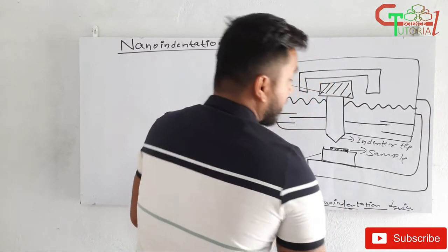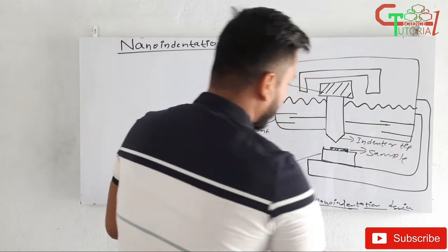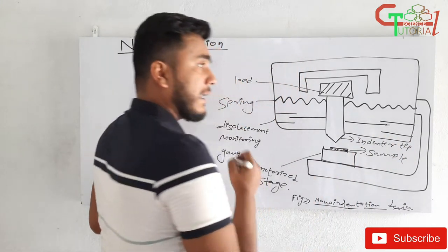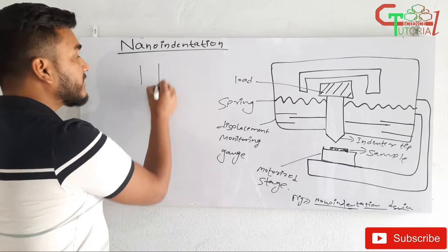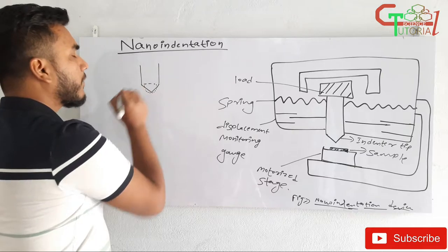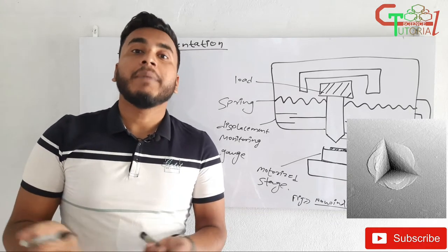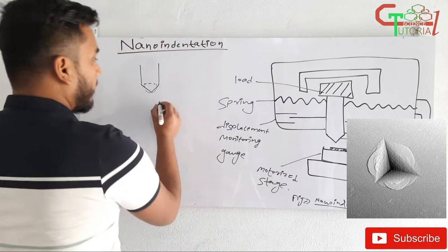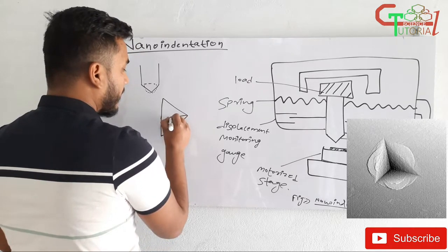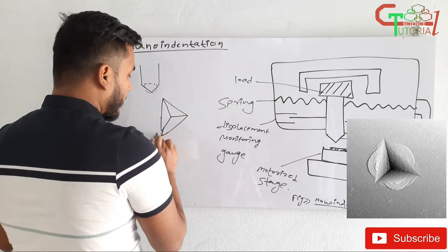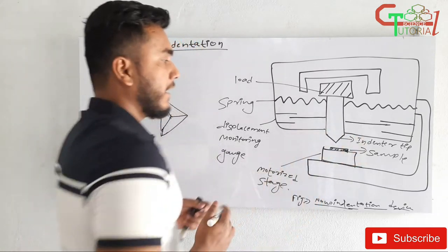Now, the indented tip is the most important component of the nano indentation device. This point is in the nanoscopic range. This tip must be in some kind of geometrical form so that we can easily find its area. It can be in conical form or pyramidal form, but generally pyramidal form is preferred. The geometry of the tip is pyramidal, and the best example of an indented tip is the Berkovich tip.